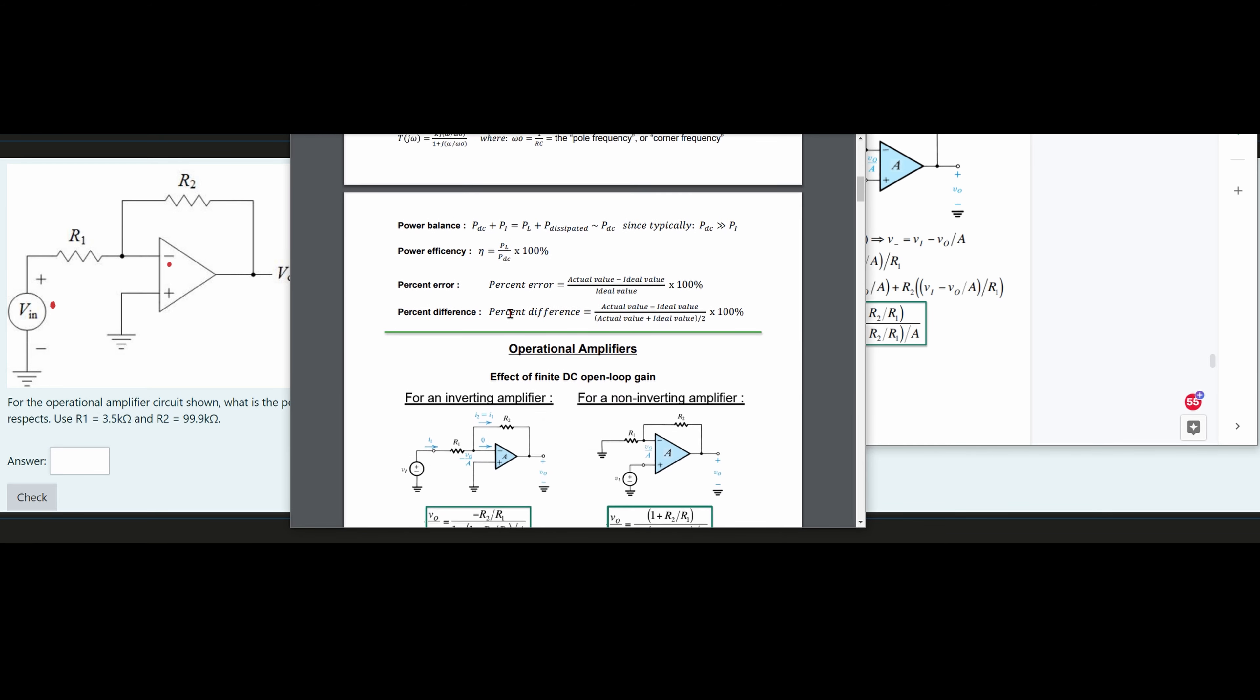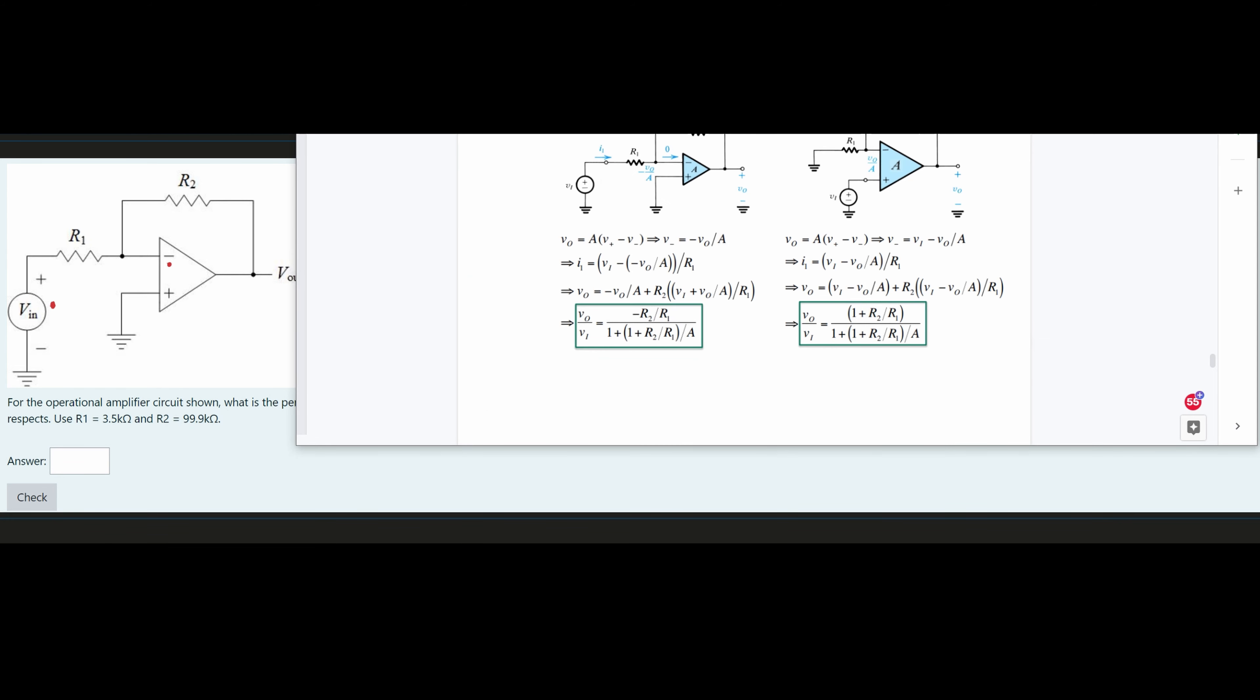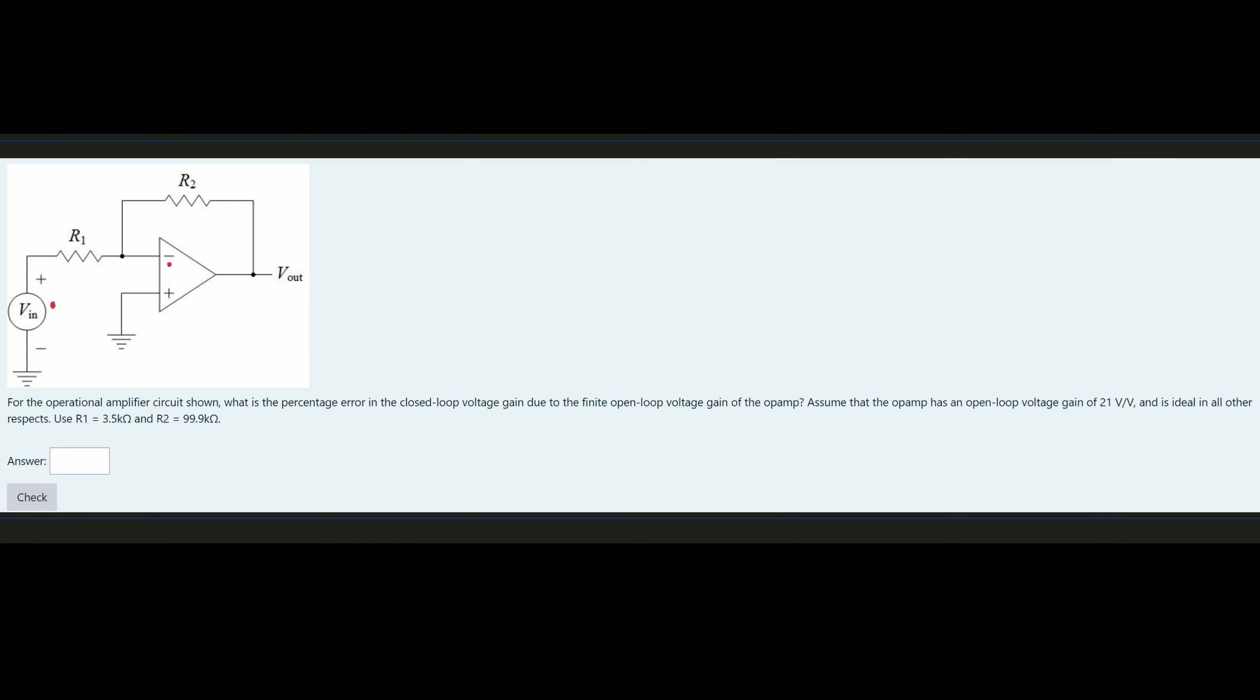So we would look at these notes. The percent error is equal to our actual value, which is the value that we would calculate, minus our ideal value, which is the value we would find with our resistors through the transfer function, and then we would divide it by the ideal value times 100%. But now we're going to solve for it, and we're going to go step by step.